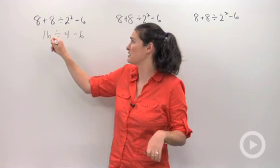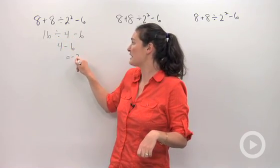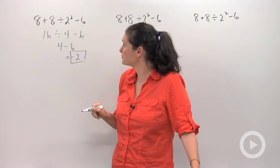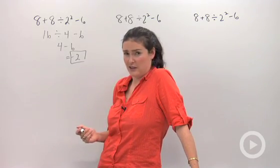So this student just keeps going and says, okay, 16 divided by 4 is 4, take away 6 and gets the answer negative 2. Does that look right to you? See if you can think about that and see if you think that's a correct answer.